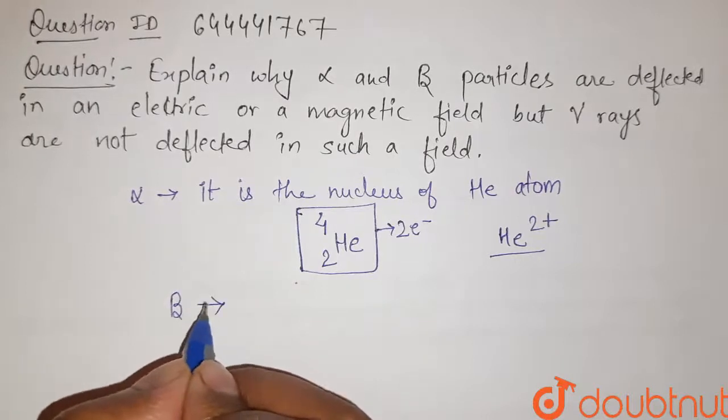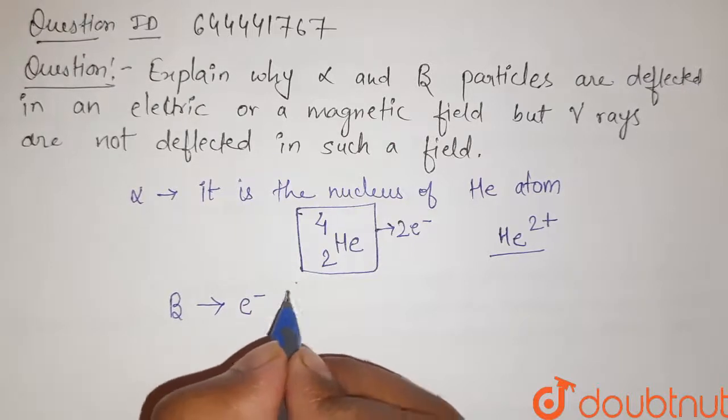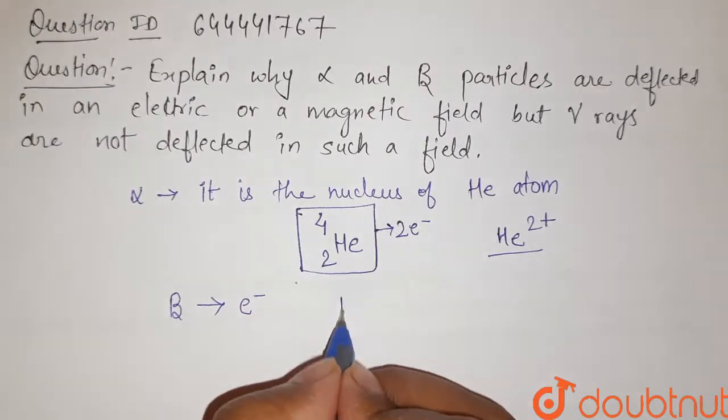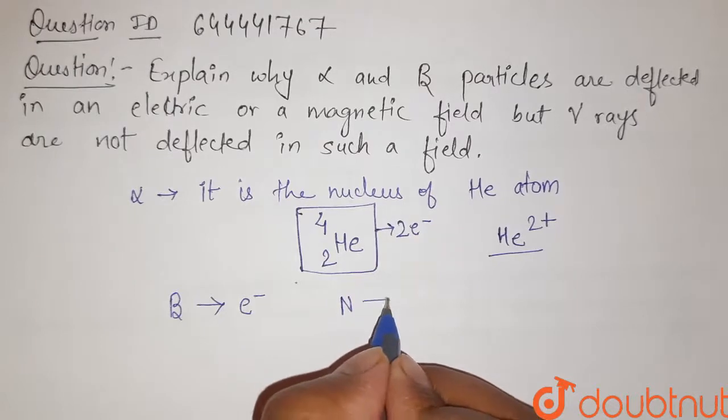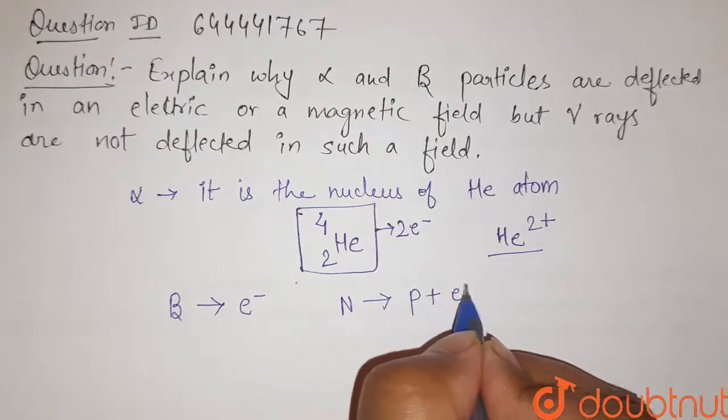Beta particle, it is like an electron. It is obtained when a neutron breaks into one proton and one electron.